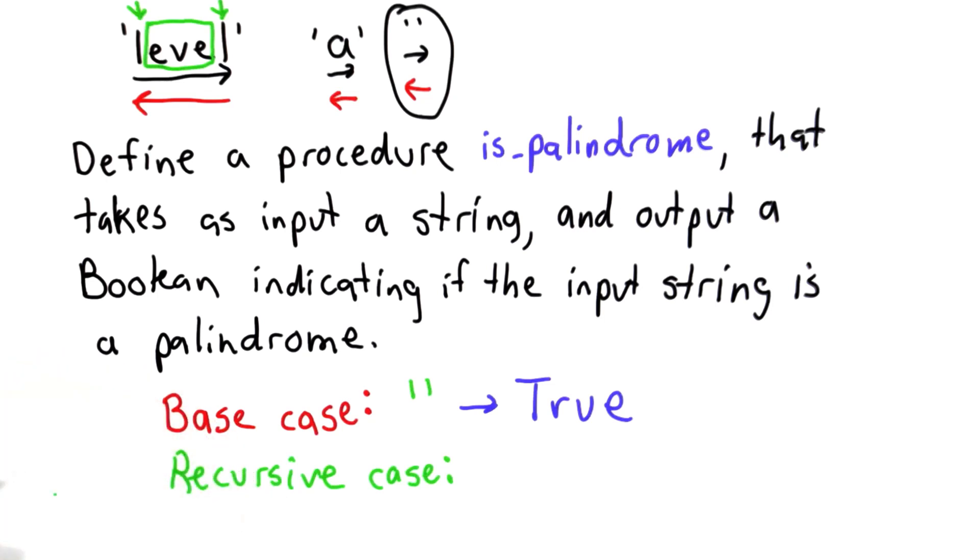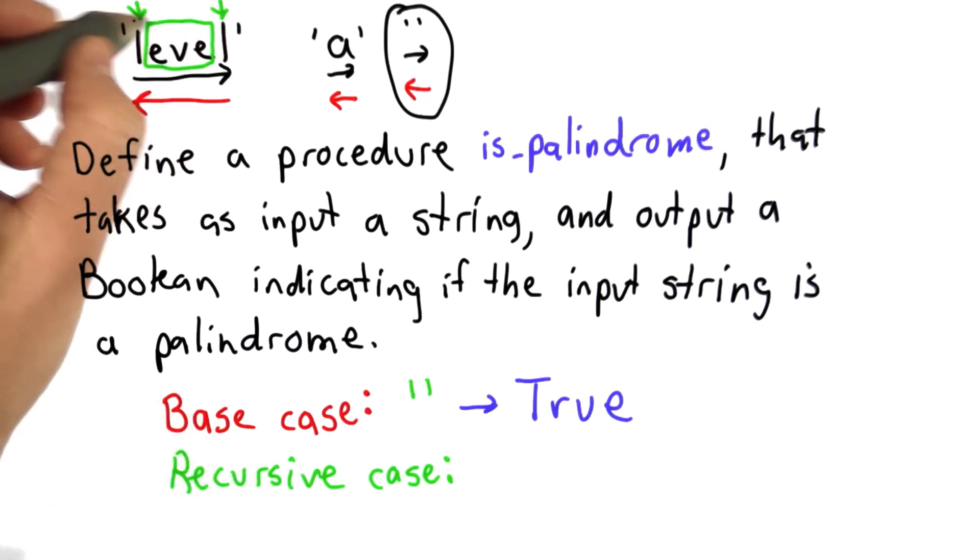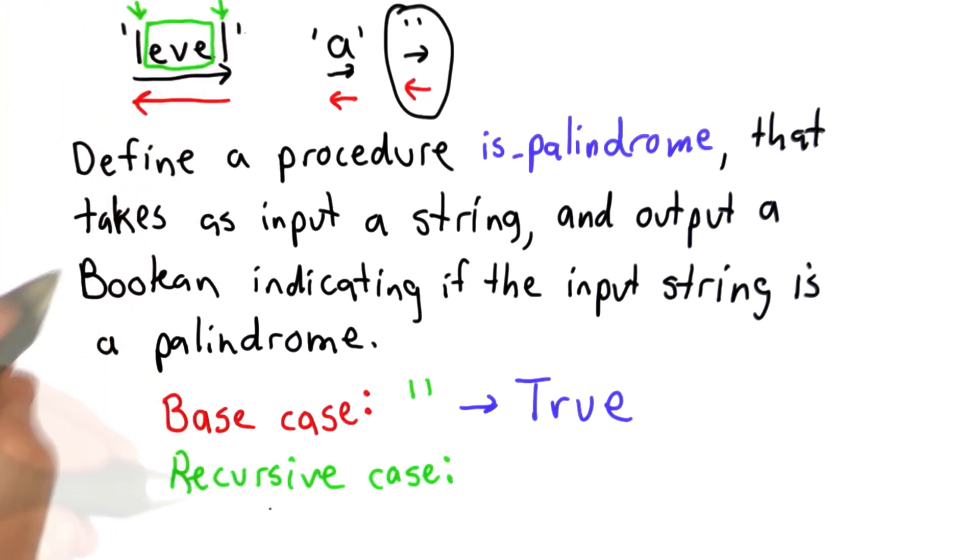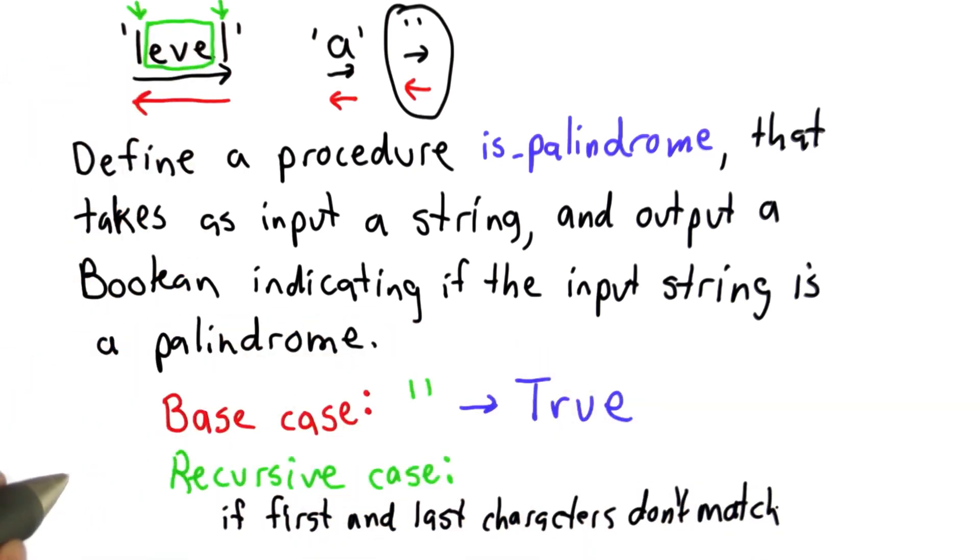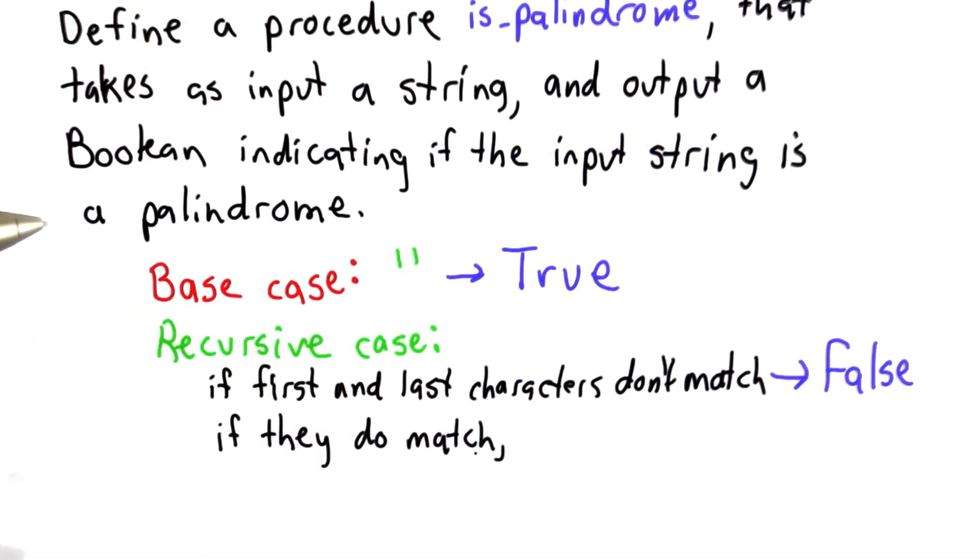So for our recursive case, we're going to test the first and the last characters of the string. If those don't match, we know it's not a palindrome. That means we know the result is false. If they do match, we're not done. We need to check the rest of the string,